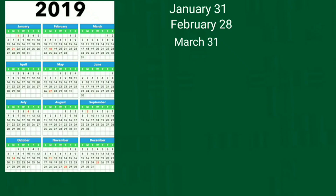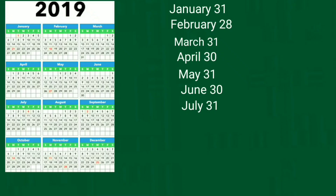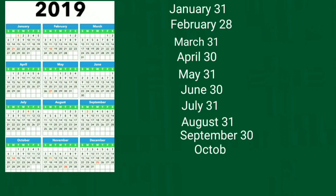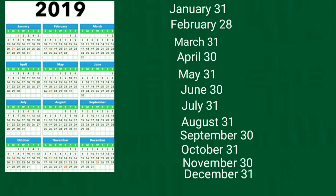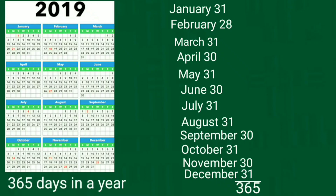Now, see how many days are in a year. In January 31 days, February 28, March 31, April 30, May 31, June 30, July 31, August 31, September 30, October 31, November 30, December 31. The sum of these is equal to 365. So, there are 365 days in a year.